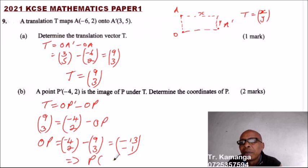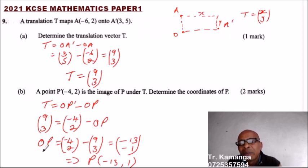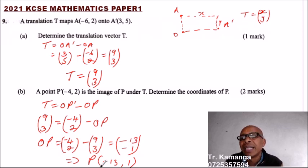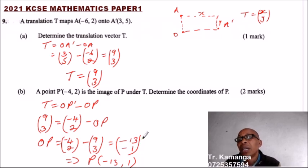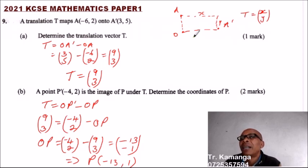Since OP equals (-13, -1), this is the position vector of P, so the coordinates of P are (-13, -1). You write it in horizontal form as the coordinates of the point. This involves vectors from Form 2 — position vectors, column vectors, and translation — and combining them correctly scores you 2 marks in part B and 1 mark in part A.